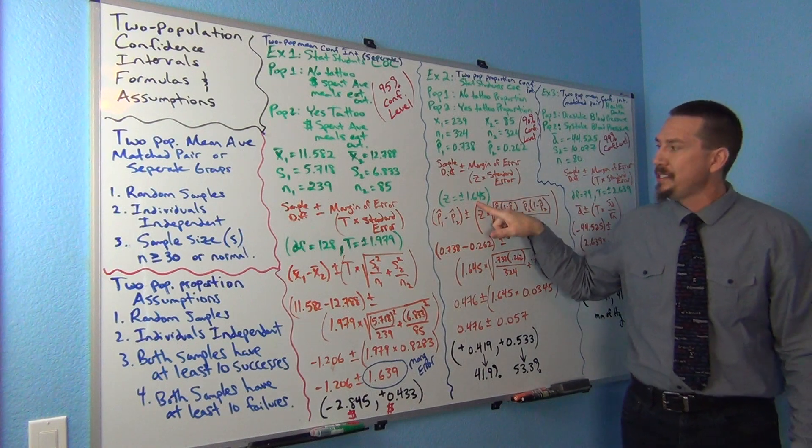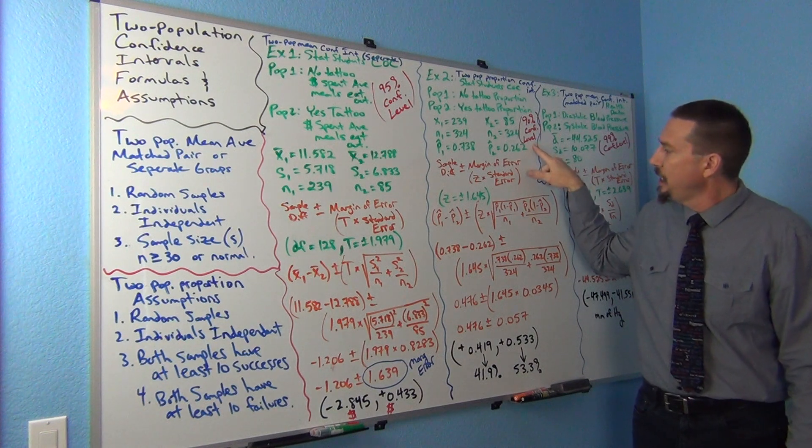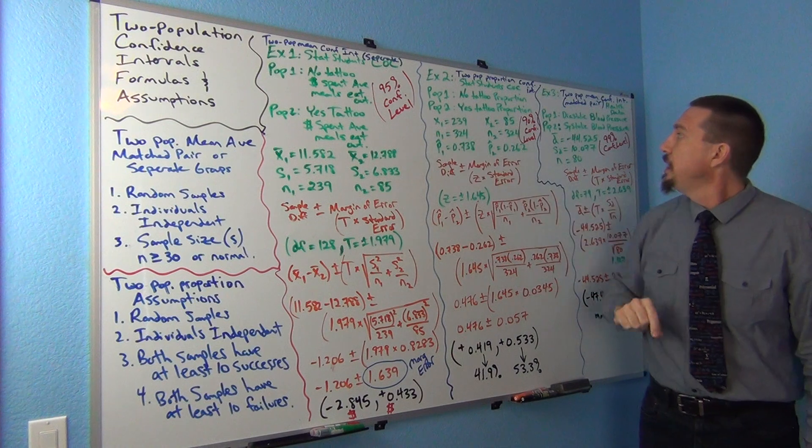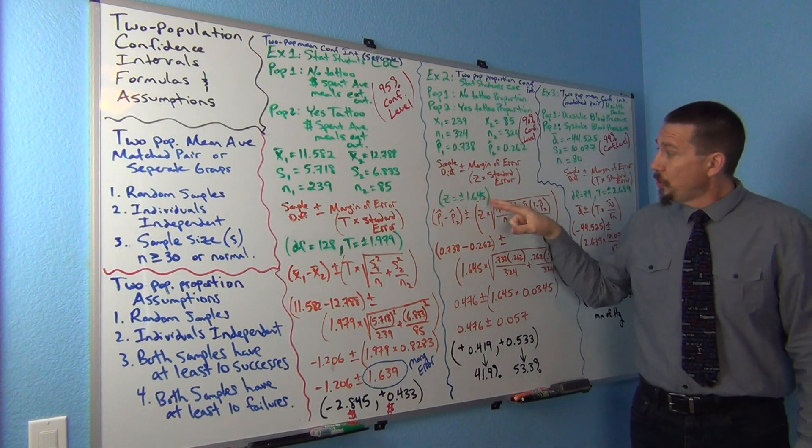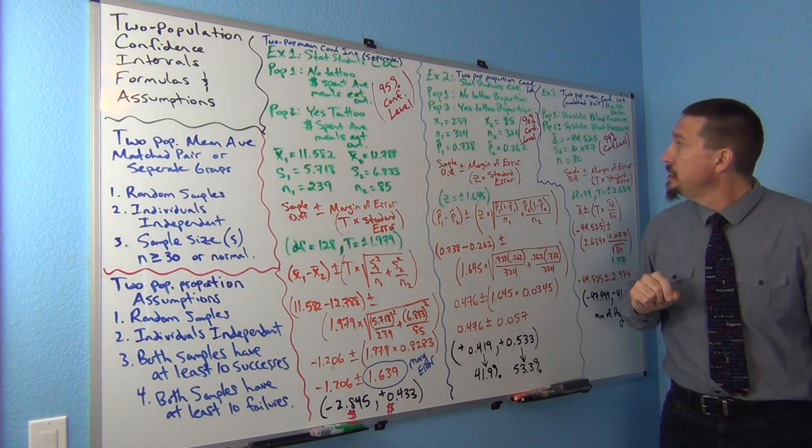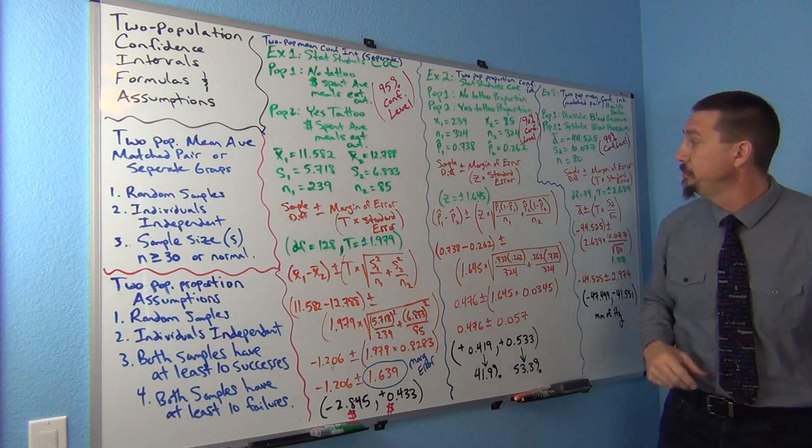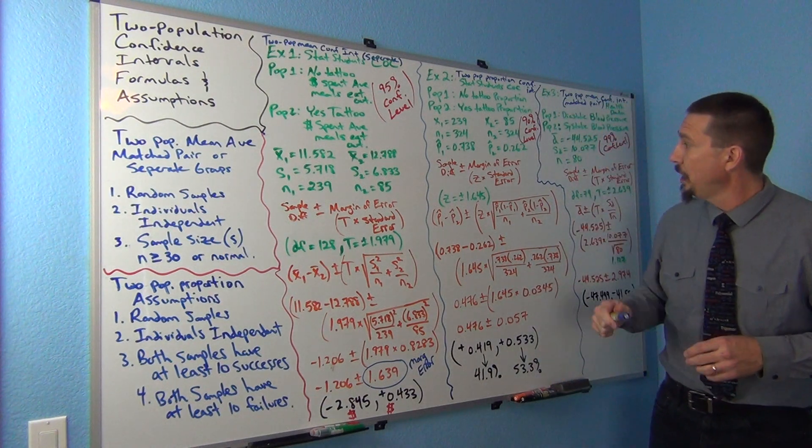All right, so our z-score, we've learned these before. We're doing a 90% confidence level, by the way. This first one was 95% confidence. That's always important information as well. So 1.645 is going to be our z-score for a 90% confidence level and two-tail. We're doing a two-tail confidence interval.